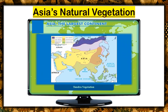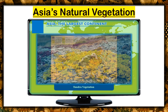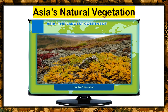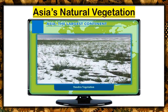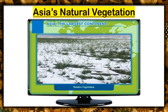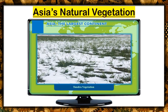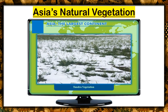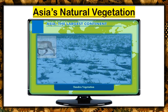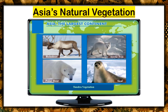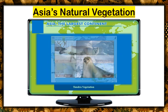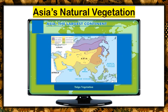Tundra vegetation exists in the northernmost areas of the continent. Short grasses, mosses, and lichens grow during the brief summer season. The land is covered with snow for most of the year. Trees do not grow and the plants remain short. Reindeer, polar bear, Arctic fox, seal, and walrus are the common animals found in this region.